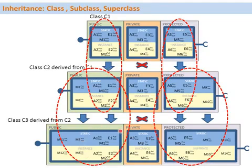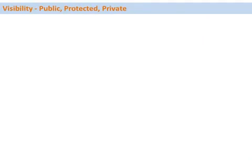So the components from the public and protected sections of class C1 are inherited to C2, and further down to C3. This kind of relationship between classes C1, C2, and C3 is called the inheritance tree. Class C1 is the superclass of class C2; class C2 is the superclass of class C3. Conversely, class C3 is the subclass of C2, and both C2 and C3 are subclasses of class C1.